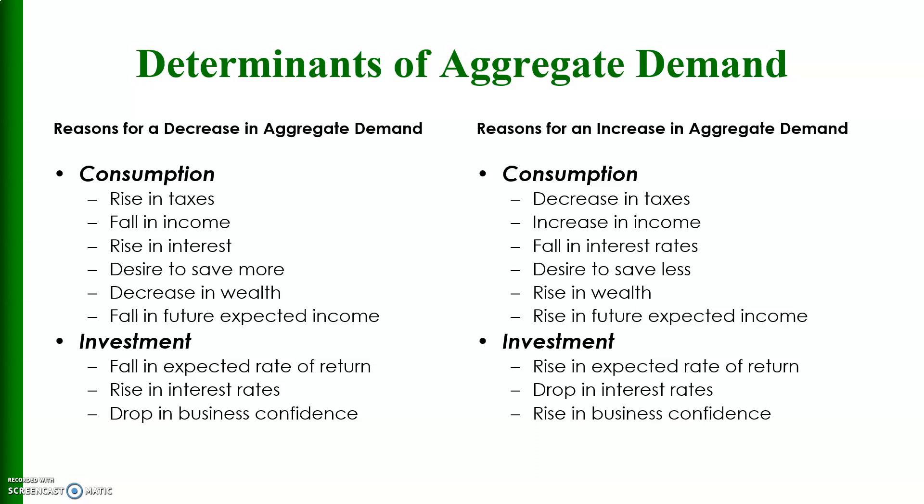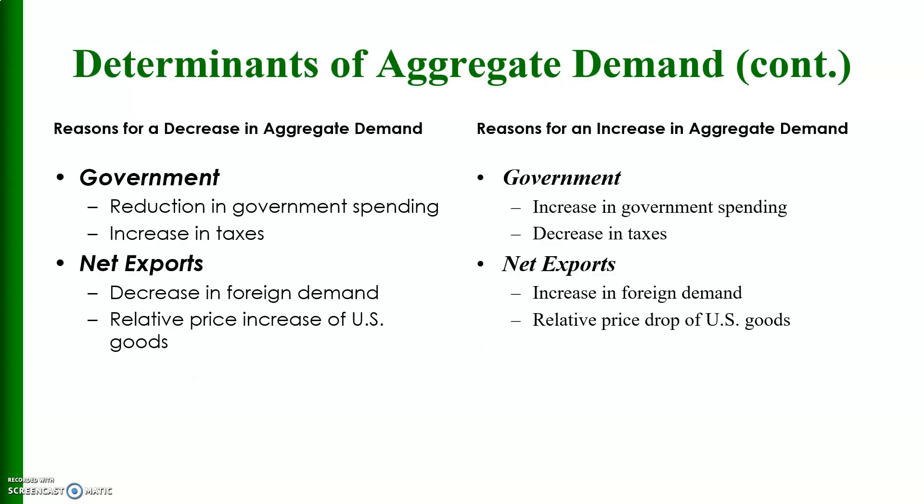Reasons for an increase in aggregate demand — under consumption: decrease in taxes, increase in income, fall in interest rates, desire to save less, rise in wealth, and rise in future expected income. Regarding investment: rise in expected rate of return, drop in interest rates, and rise in business confidence.